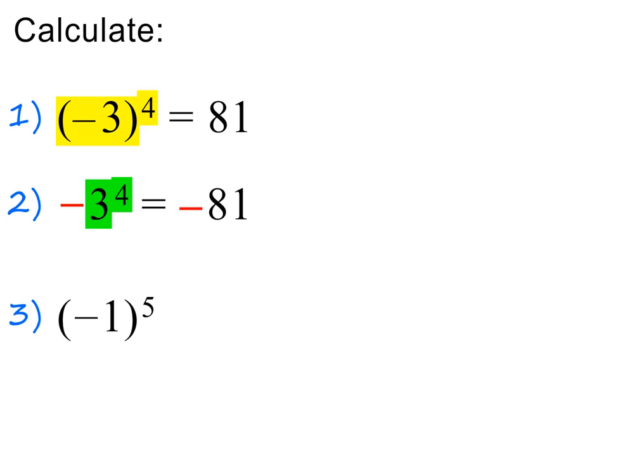In the next example, we are asked to calculate minus 1 all to the power of 5. Because of the brackets, the minus is also part of the base. And because the exponent is odd, the answer is minus 1. I hope you are happy that 1 to the power of any exponent is just 1.